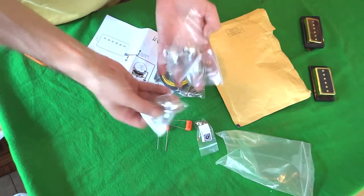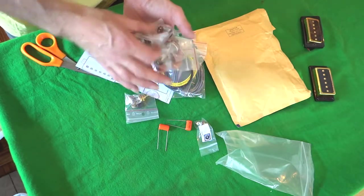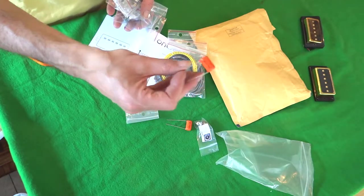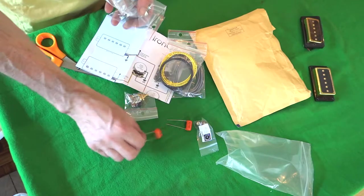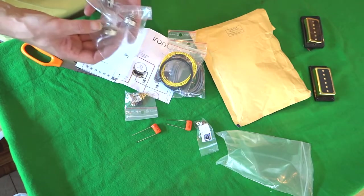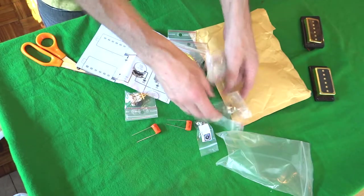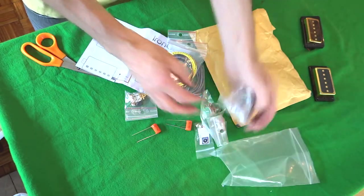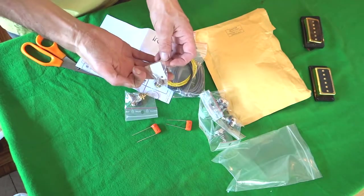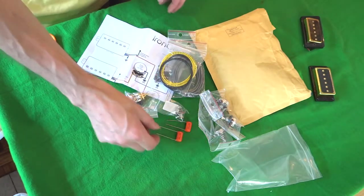So you get your volume pots, 500k, there's four of those. Guitarists tend to like these great big looking capacitors, the orange drop capacitors. So you get four volume pots, you get your jack socket.